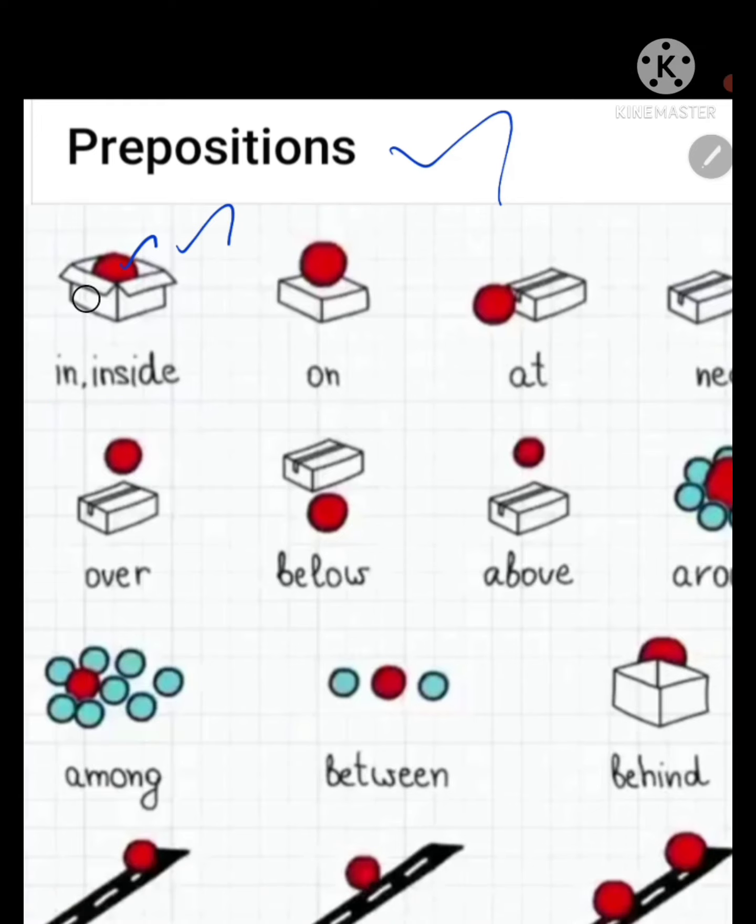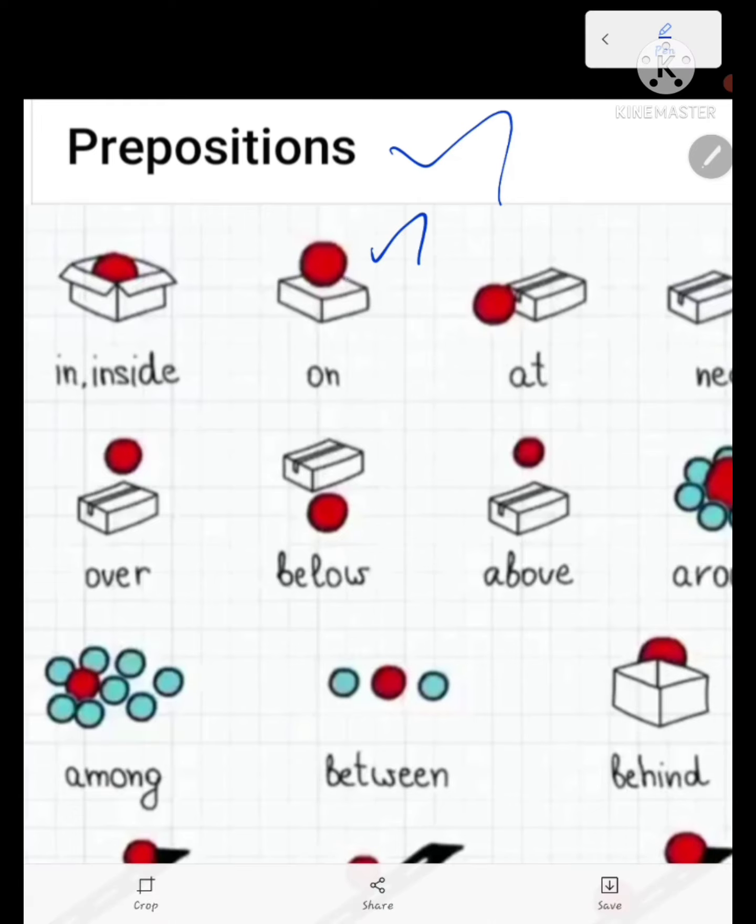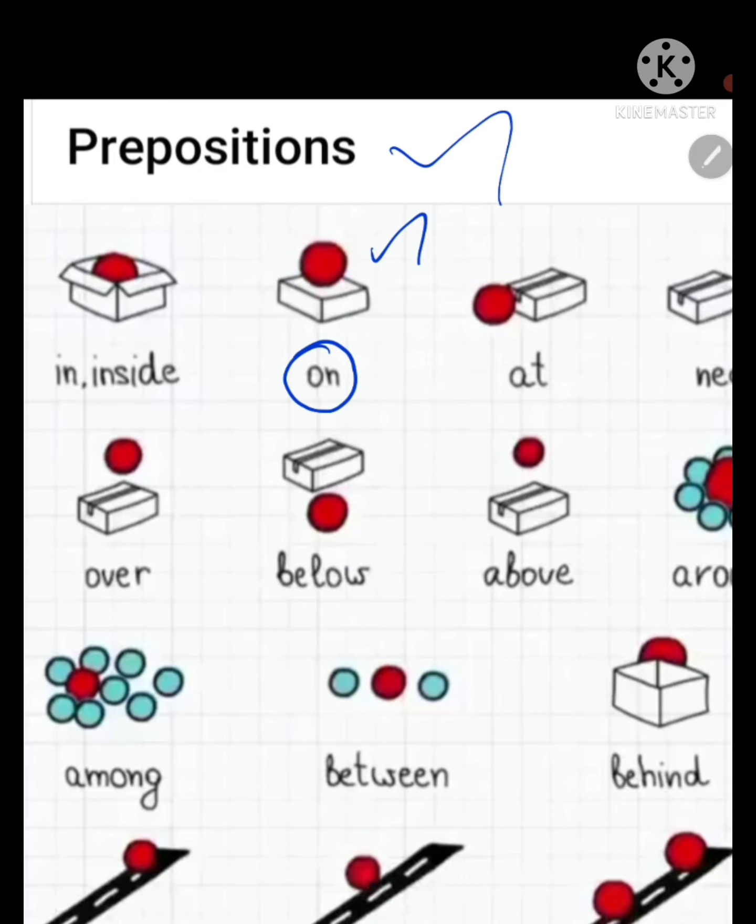Now look at the second preposition. Where is the ball now? It is on the box. On means what?